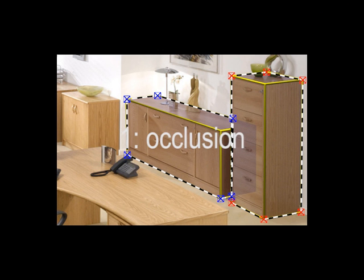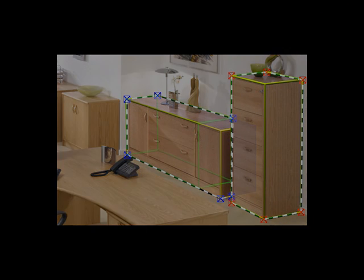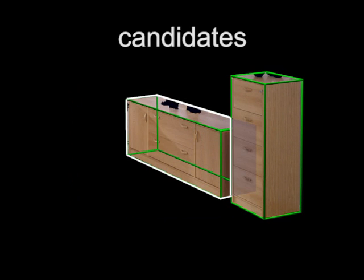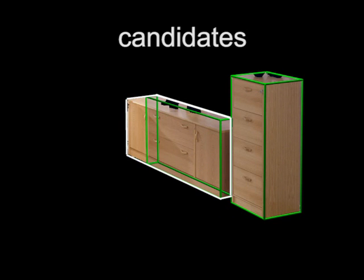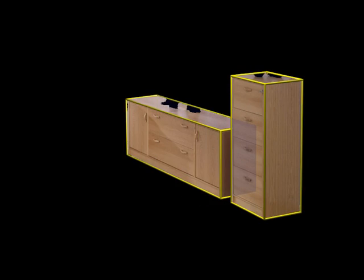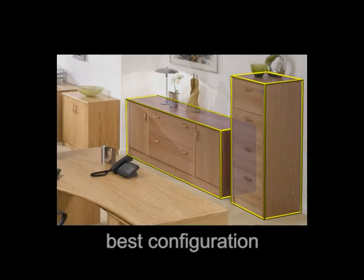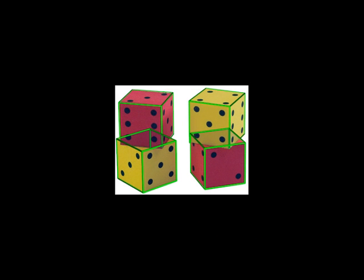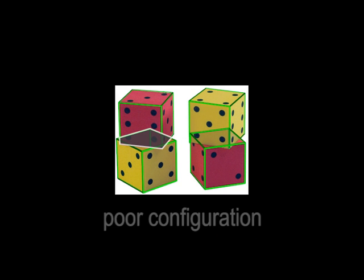Ambiguities can arise due to occlusion and stacking. In this scene, each segment can have multiple 3D candidate cuboids. We resolve such ambiguities by jointly considering segment pairs using an MRF formulation. Similarly, we resolve stacking ambiguities by preferring a proxy set that better explains the scene.